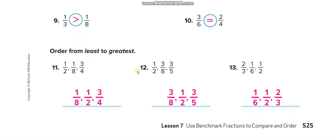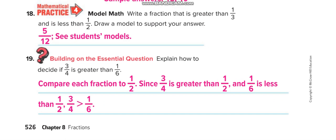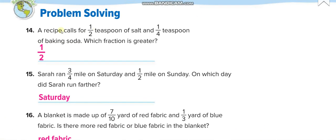Here you have three fractions to order from least to greatest. The smallest: half of 8 is 4 but the numerator is just 1, so that is less than half. Next, the fraction equal to half. Then half of 4 is 2 and the numerator is 3 — more than half, so that is the greatest. For the recipe problem: it calls for half teaspoon of salt and 1 over 4 teaspoon. Half of 4 is 2 but we have 1, so 1 over 4 is less than half — meaning half teaspoon of salt is greater.